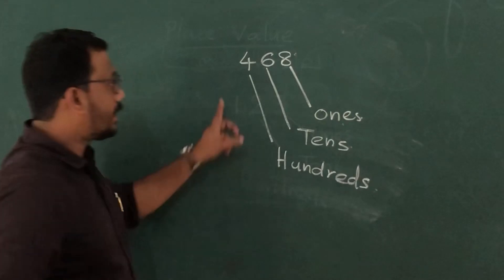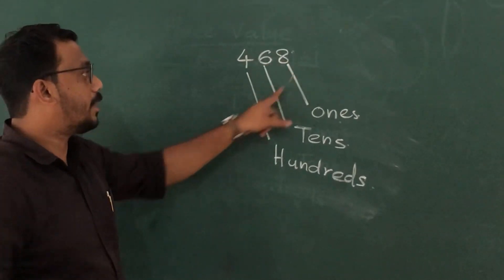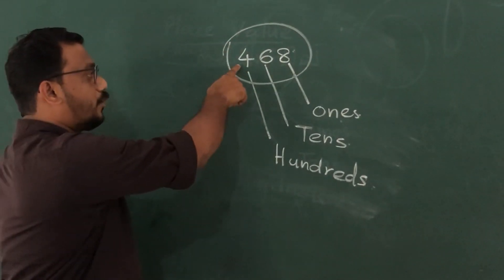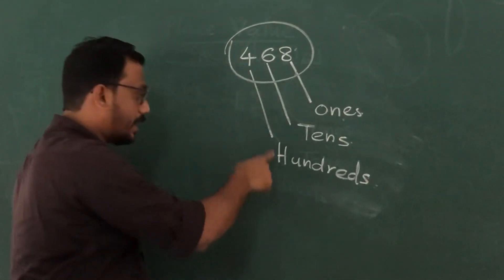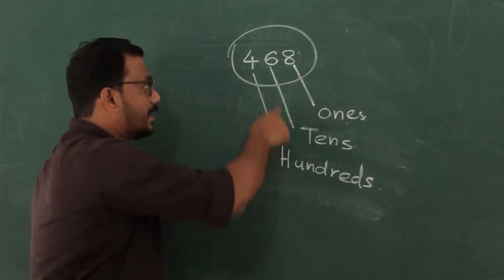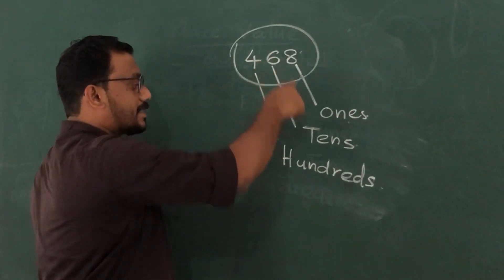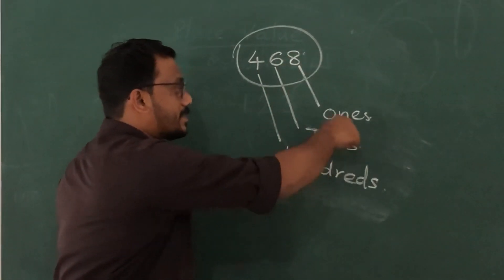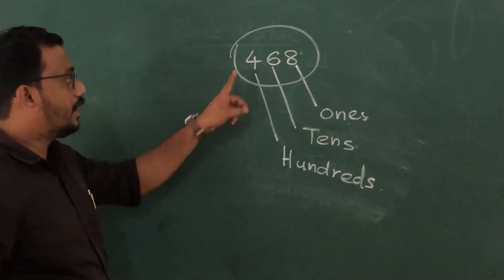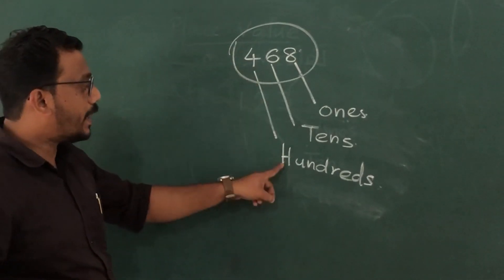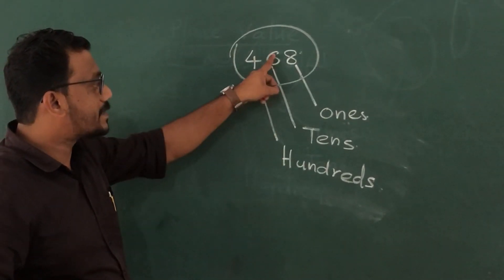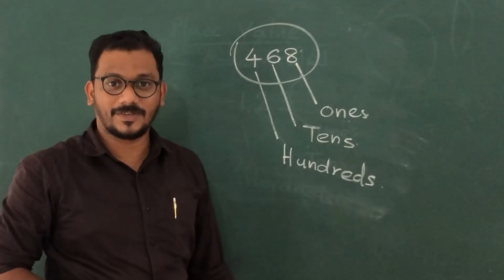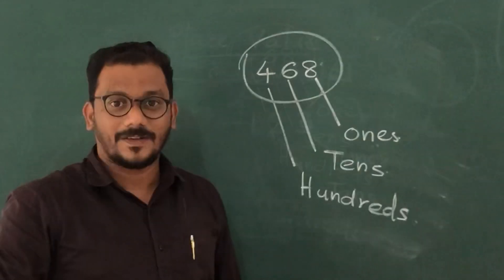In this number, four hundred sixty-eight, there are four hundreds, six tens, and eight ones — total four hundred sixty-eight. Understood?